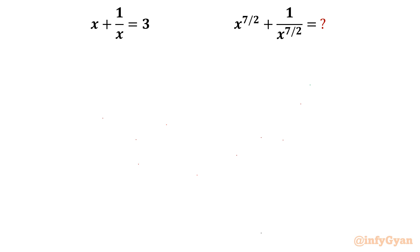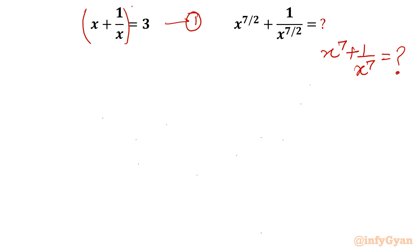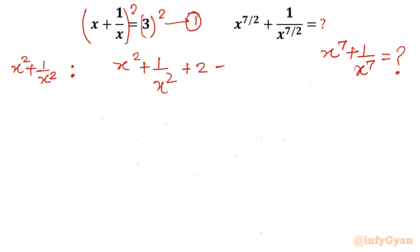I am going to solve this question by one method and we will talk about the second one. My target is first to find x power 7 plus 1 over x power 7. Given equation is x plus 1 over x equals 3. I will consider whole square both sides. My target is to find x square plus 1 over x square, that is why I squared. So x square plus 1 over x square plus 2 equals 9, which means x square plus 1 over x square equals 7.